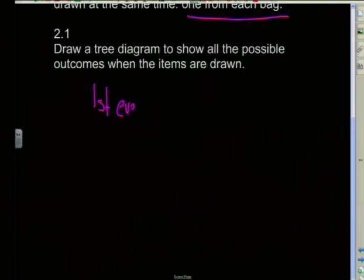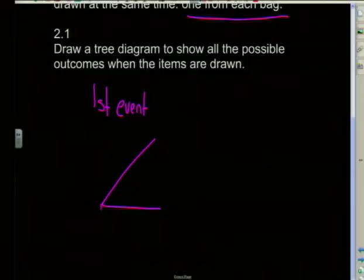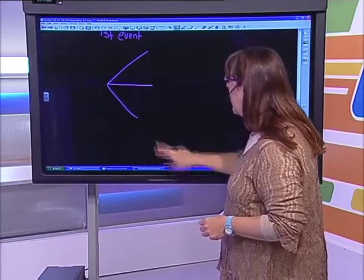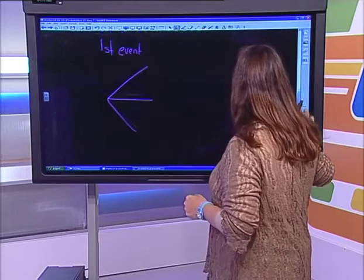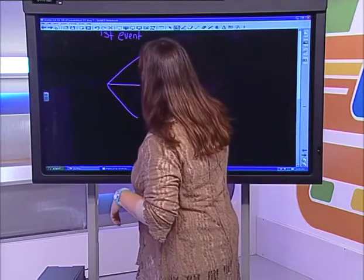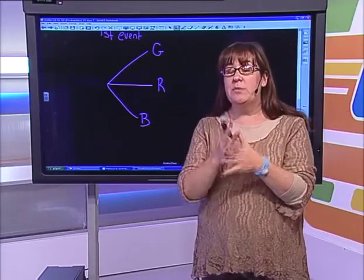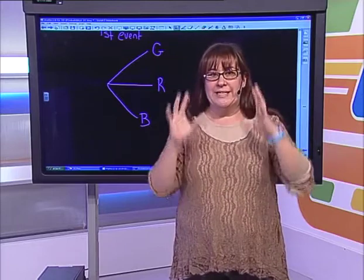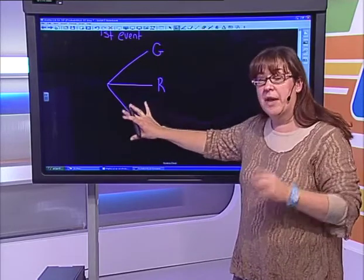Our first event is choosing a marble out of one bag, and I had three different marbles. This is why it's called a tree — each one of these I'm going to refer to as branches. I start off in the center of the page and create three branches because I've got three events, each representing a marble. I had three different colors: green, red, and blue — G, R, and B. For the second event and thereafter, we create branches for each one of our existing branches.